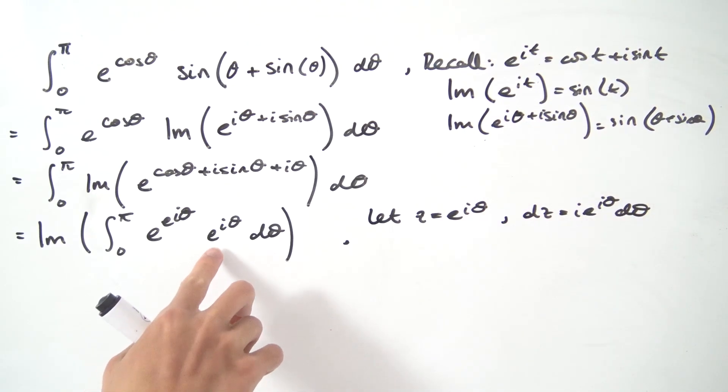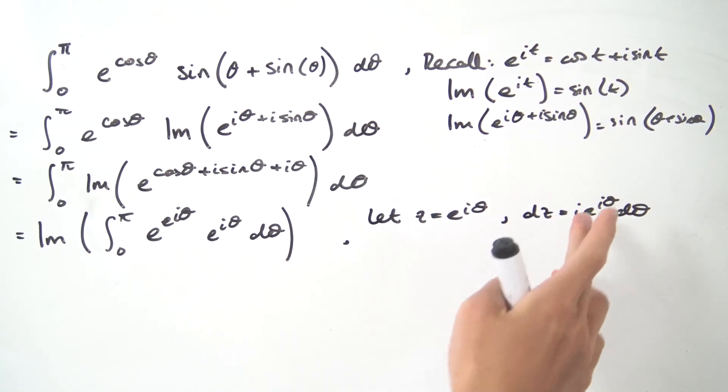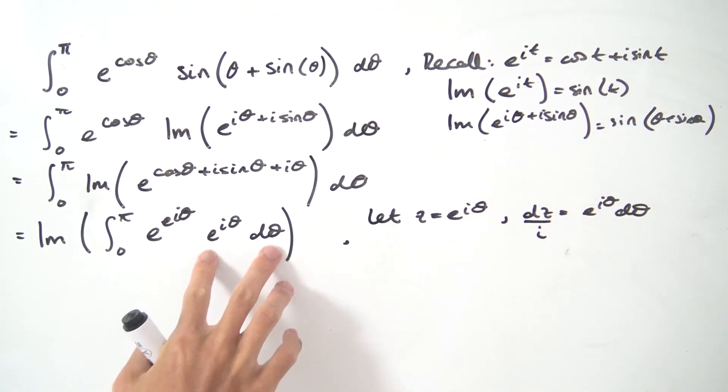Now what do we want? We want just e to the i theta d theta, so let's just bring that i divided on both sides, so dz over i is what we have in here.